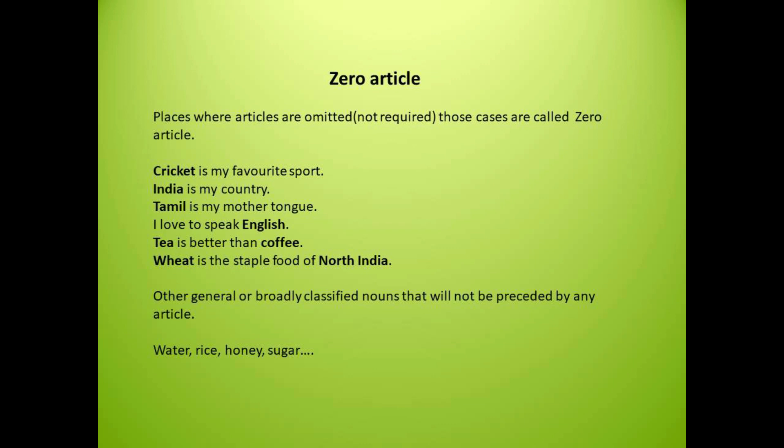The next example is: wheat is the staple food of North India. So here, wheat is used without an article. However, as an exception: the wheat grown in Punjab is nutritious — referring to a particular type of wheat. So here, we use 'the'.